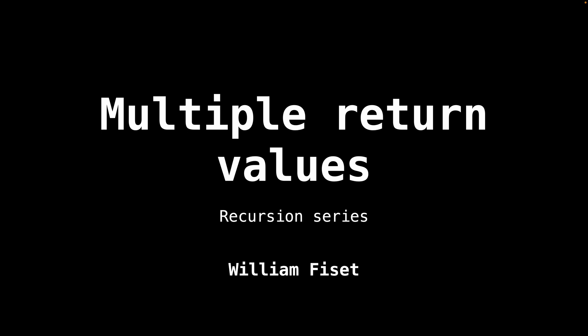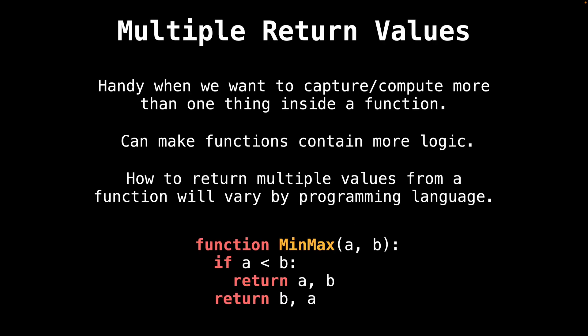Today we're going to probe further into the world of recursion. All the functions we've been looking at so far have always dealt with a single return value. Today we are going to be taking a look at how we can return multiple values from a recursive function. This is something we want to know how to do as it comes in handy time and time again. The whole idea behind returning more than one return value from a function is that we want to be able to capture or compute more than one thing inside a function and return it as an output.